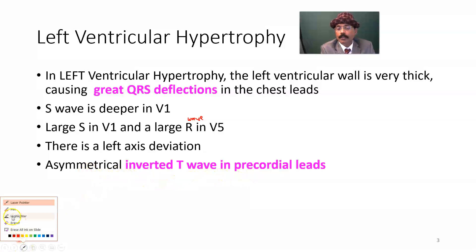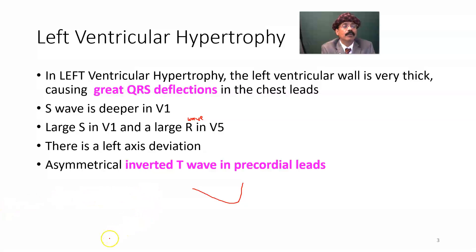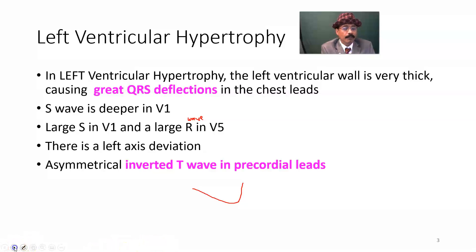How does the T-wave look? It falls steeply and then goes up rapidly — there is an asymmetrical inverted T-wave, a feature of left ventricular hypertrophy. You may look at V5, V6, lead I, and AVL to find this pattern.